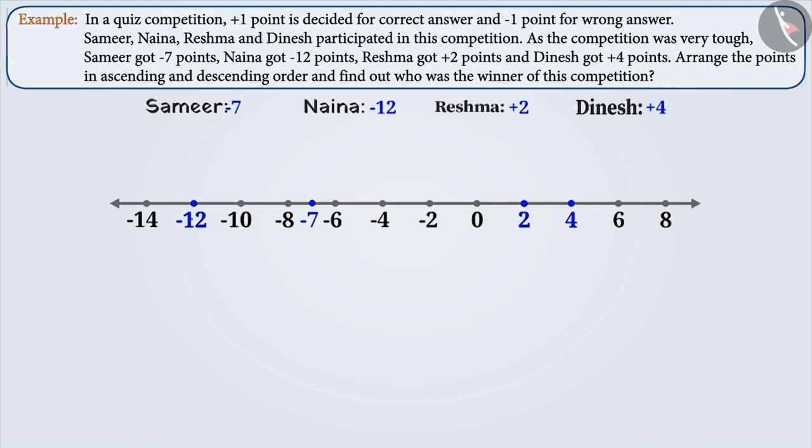As you can see, minus 12 is on the extreme left. It is the smallest number among the given numbers. Then, let's move to the right. Now, there is minus 7 which is to the right of minus 12, and hence it is larger than minus 12, but since it is to the left of plus 2 and plus 4, it is smaller than these two. So, we will write it after minus 12.